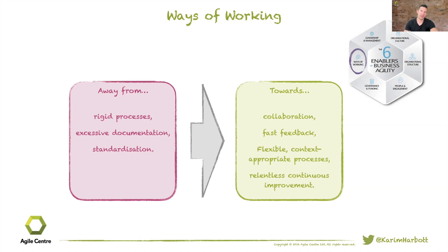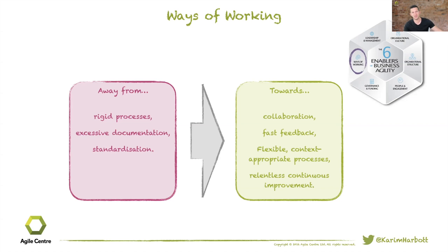Finally, ways of working — honestly, this is the easy bit. It's the processes, practices, and tools: getting your DevOps toolchain in place, design thinking teams, Scrum teams — actually making it work. It will be so much easier to do once that underlying organizational operating system is in place with the other five enablers. Give people the freedom to own their processes, improve them continually, seek fast feedback, and collaborate — things we know are incredibly effective but that organizations aren't designed to do.